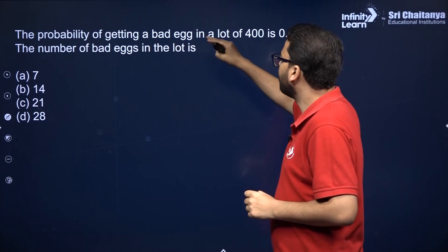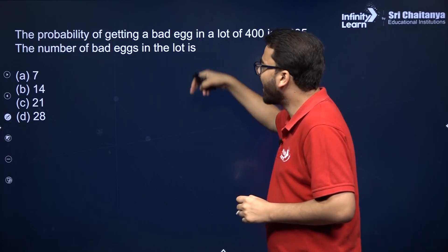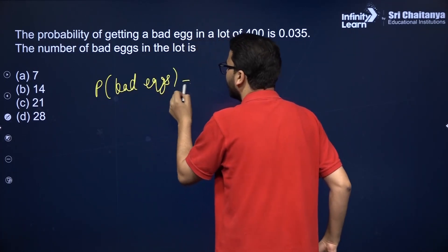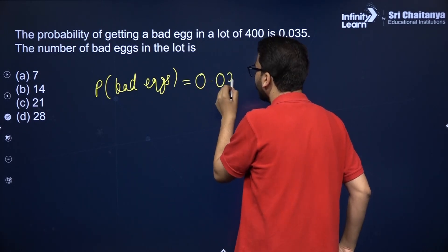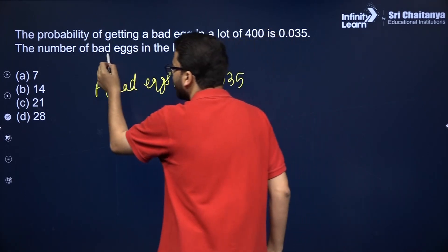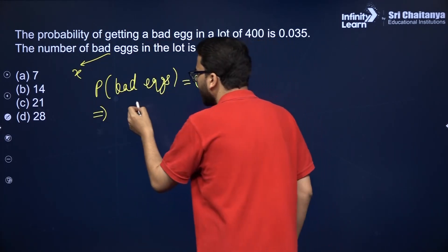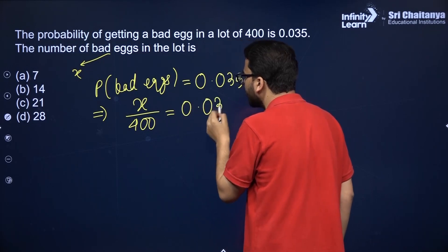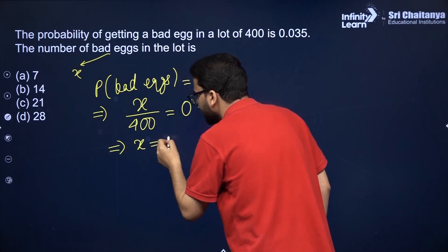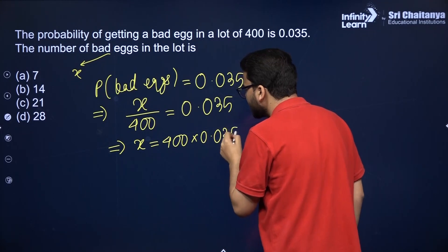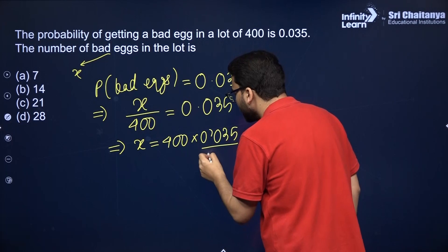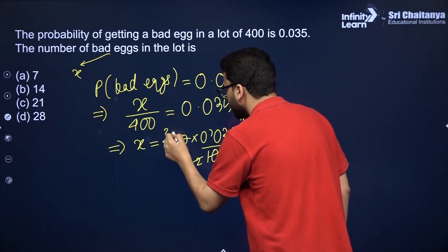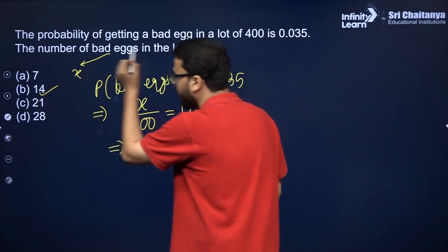The next question: the probability of getting a bad egg in a lot of 400 is 0.035. You have to find the number of bad eggs. Suppose the number of bad eggs is x. The probability of getting a bad egg is x divided by total number of eggs, so x over 400 equals 0.035. Cross multiplying: 400 into 0.035 gives 14. So the number of bad eggs in the lot of 400 is 14.